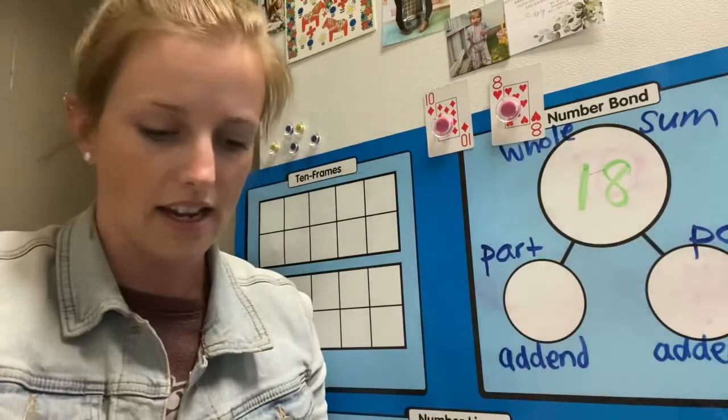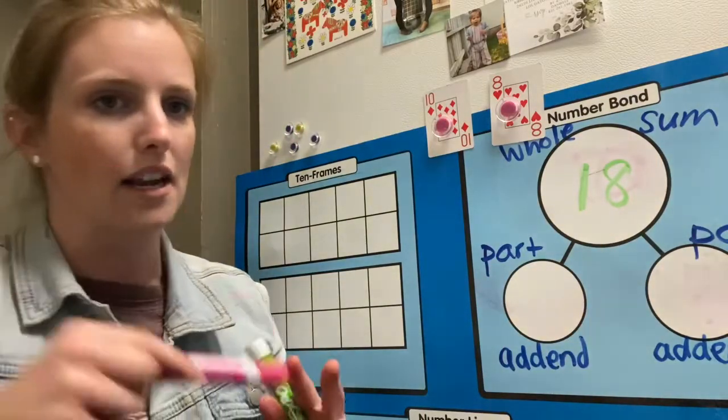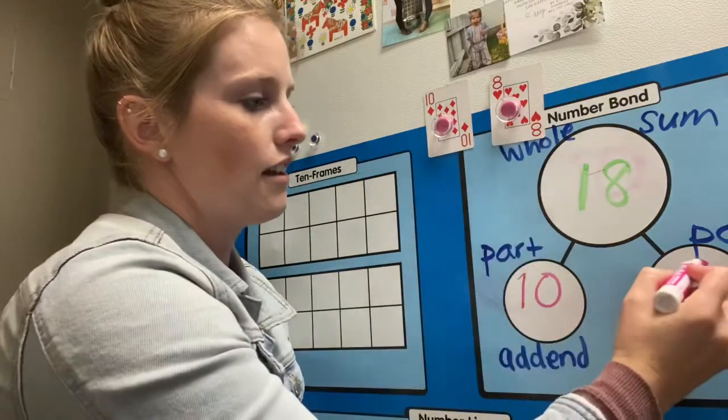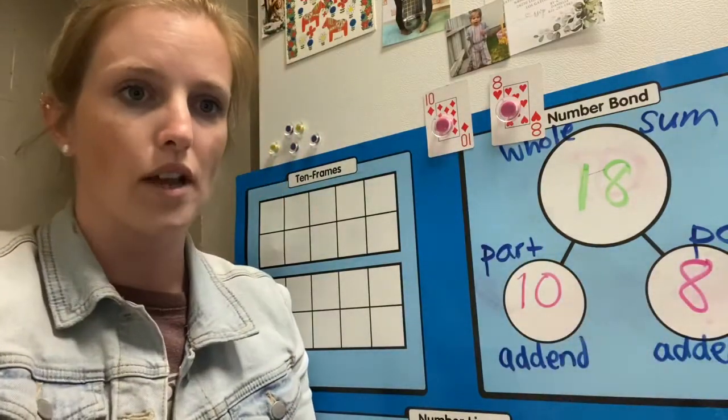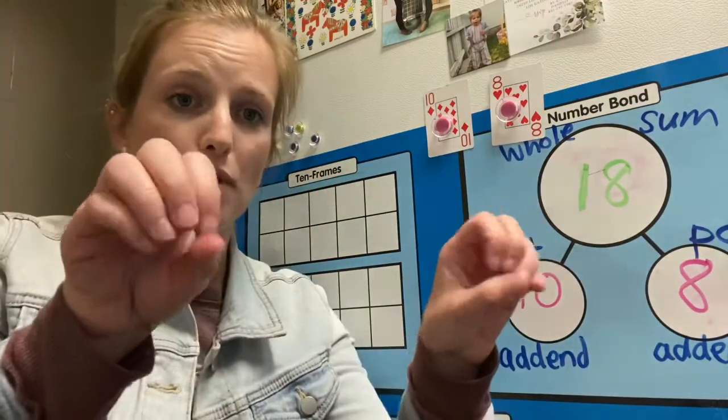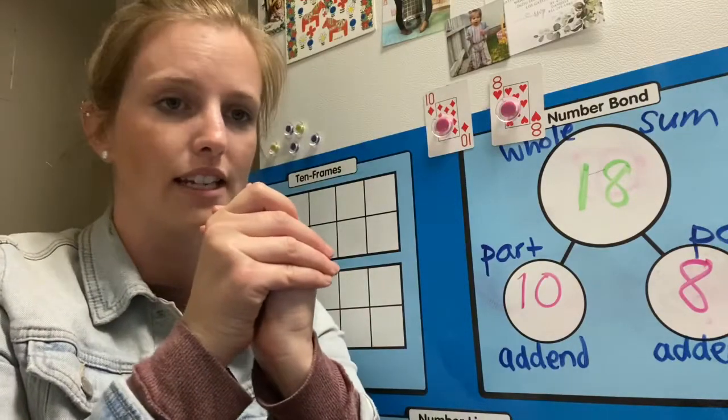And then here were my two addends that I put together. 10 and 8. So it works like this. 10 plus 8 is the same as 18. If I'm putting those two parts together, I make an 18.